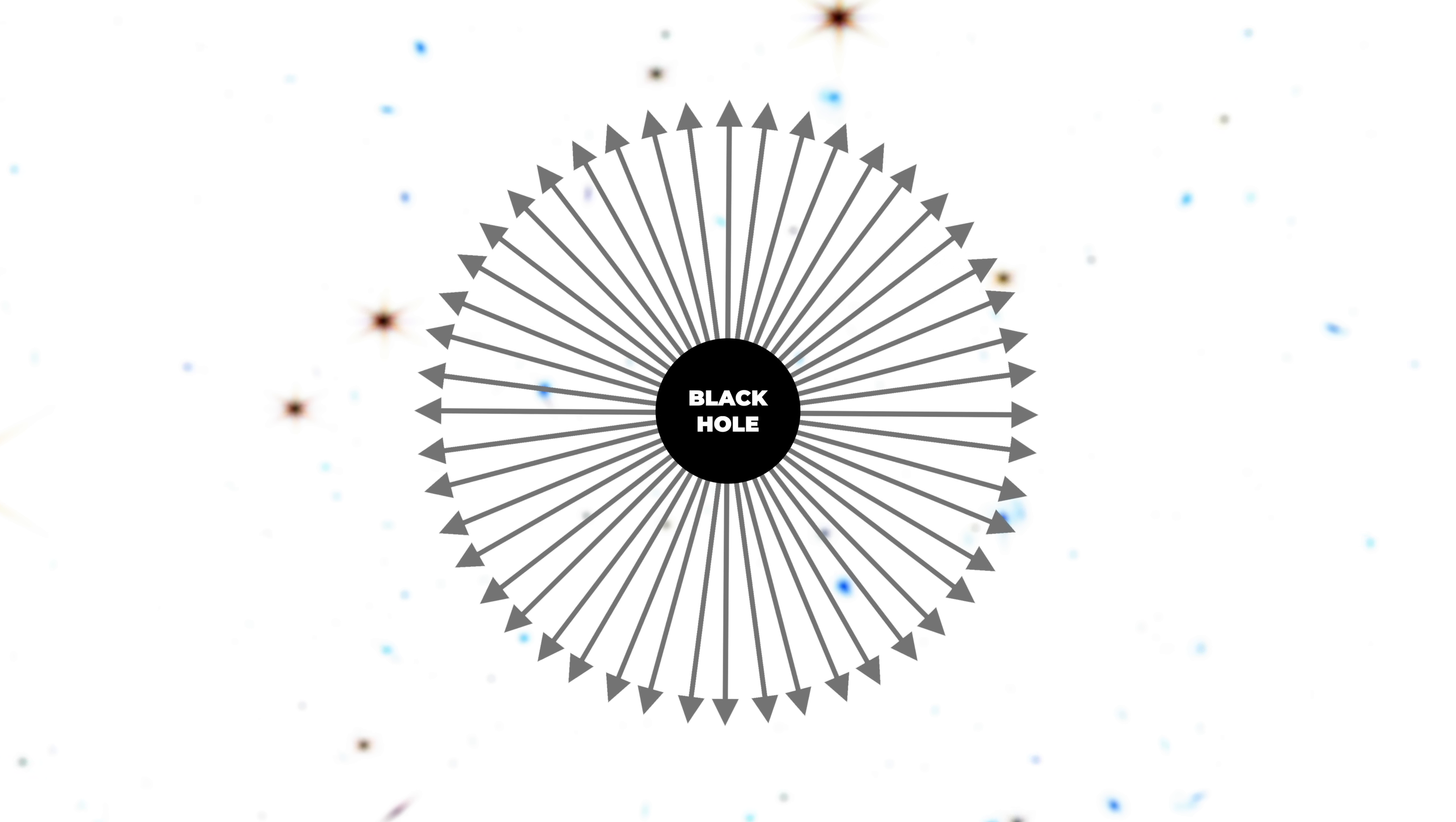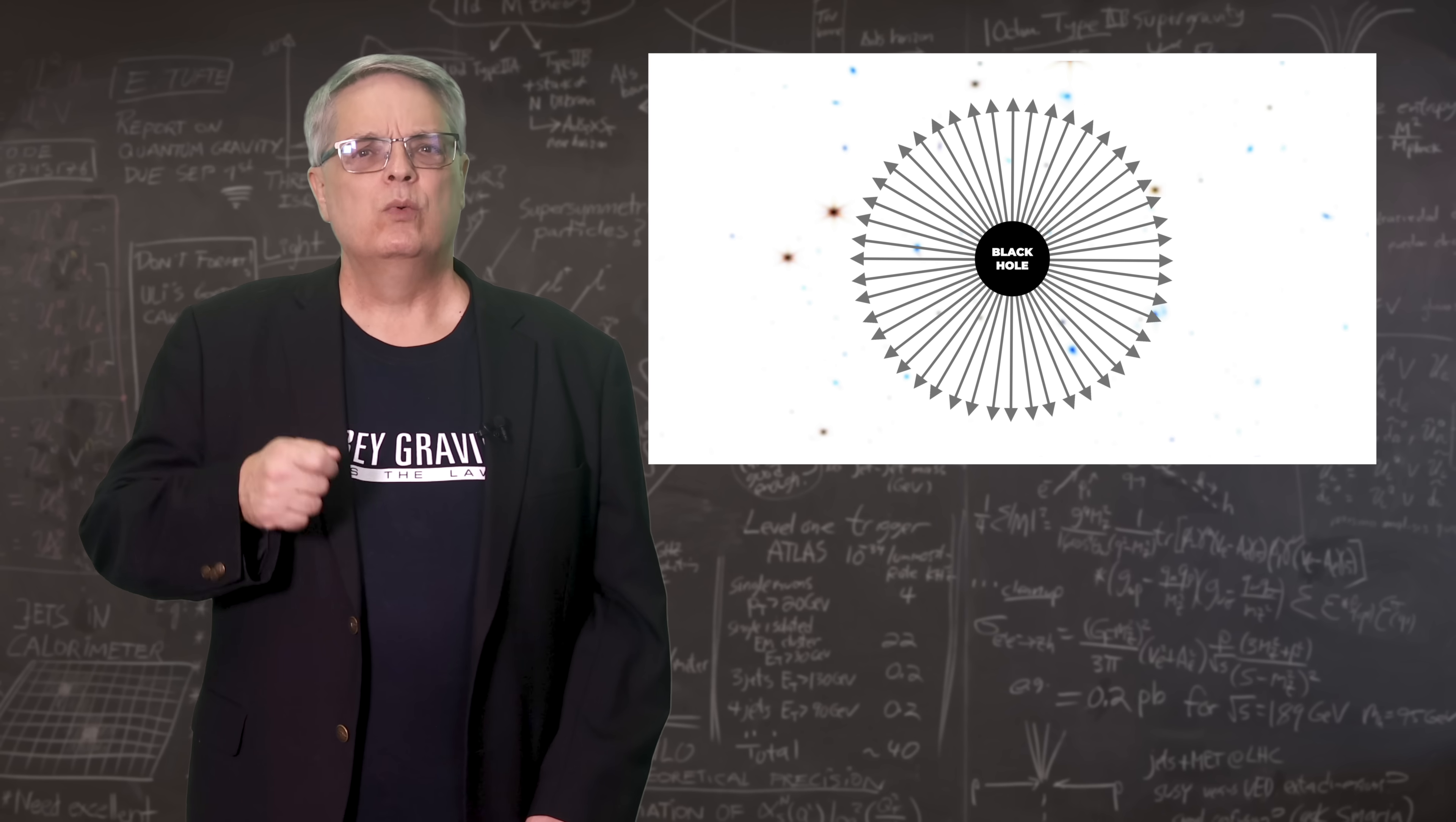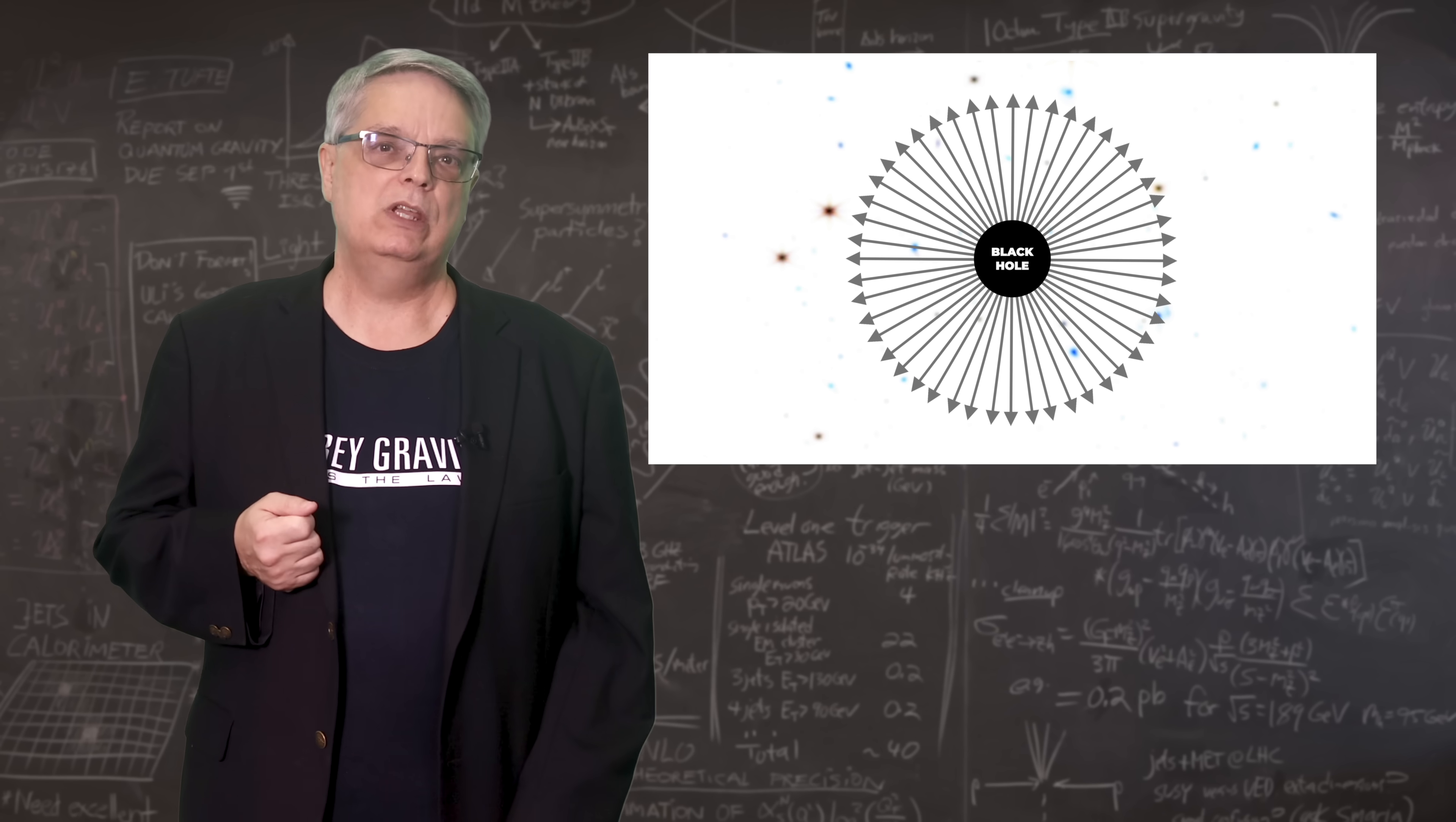The lines are gravity radiating away from the black hole. You can sort of think of the lines as the total amount of gravity or something. Where the lines are closely spaced, gravity is stronger, and where they are far apart, gravity is weaker.